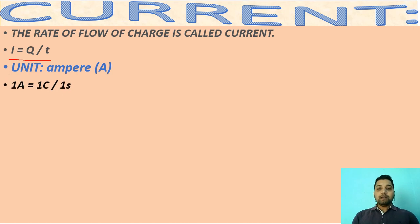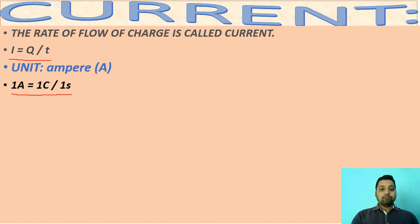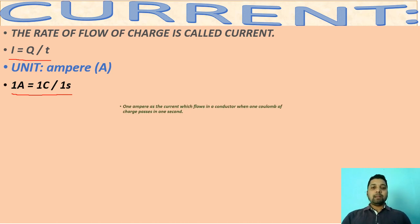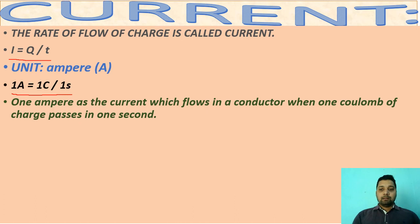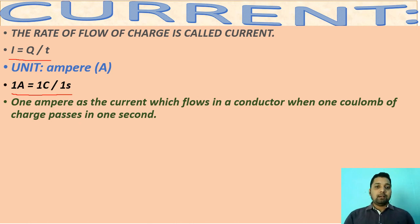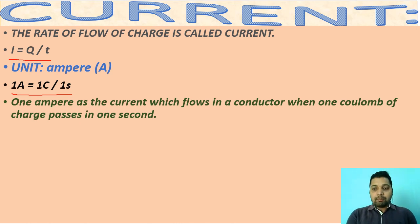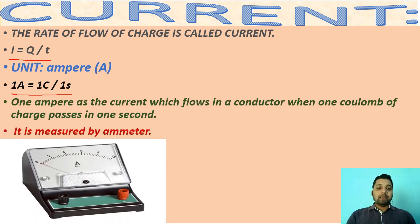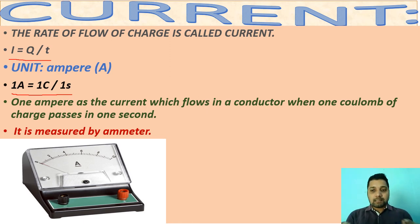One ampere is equal to one Coulomb by one second. We can define one ampere of current as: when one Coulomb of charge flows through a conductor in one second, the amount of current flowing through it is called one ampere. This current is measured by a device in an electric circuit called the ammeter. An electric circuit is a closed path through which current flows from the source to the appliance. Depending upon the source, current is divided into two parts: one is called DC (direct current) and one is called AC (alternating current).